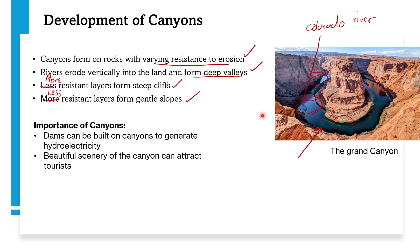Canyons have several important functions. We can build dams on canyons because the valleys contain rivers that cut deep. These dams can be used to generate hydroelectricity — electricity generated from the power of water. For example, a dam built on the Grand Canyon could generate electricity using the fast-flowing river water.